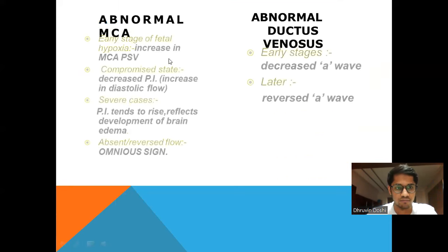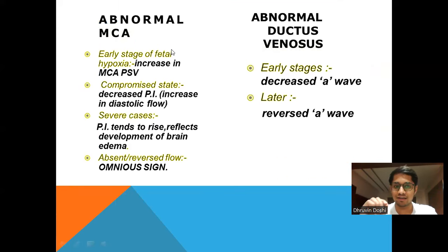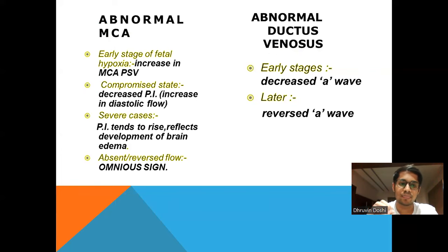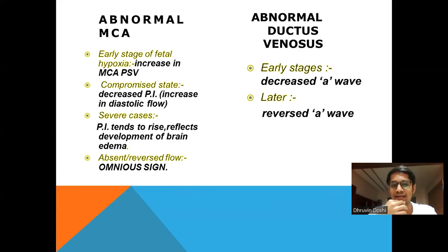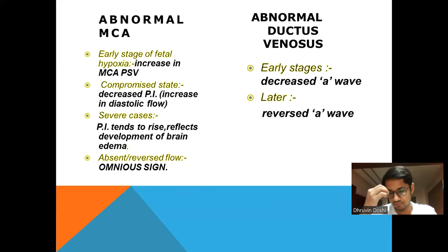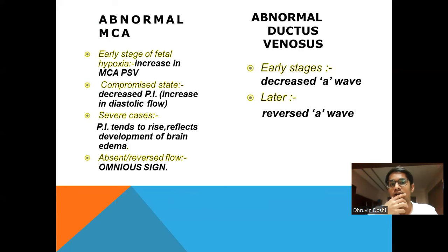For abnormal MCA: in early stages of fetal hypoxia there is an increase in MCA PSV. In a compromised state, decreased PI is seen. In severe cases, PI tends to be raised, reflecting the development of brain edema. In absent or reversed flow, there is an ominous sign. For abnormal ductal stenosis, early stages show decreased A wave, and in later stages there is completely absent or reversed A wave.